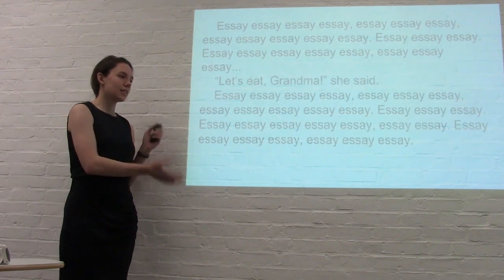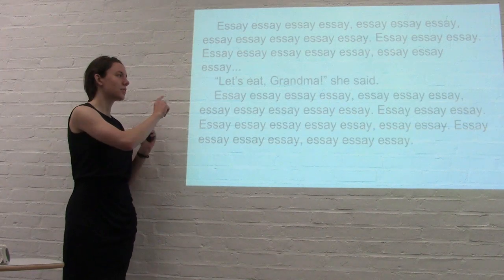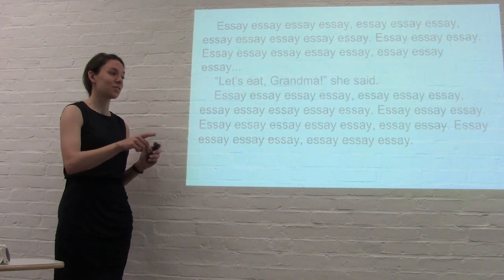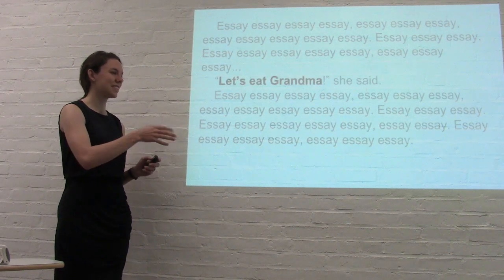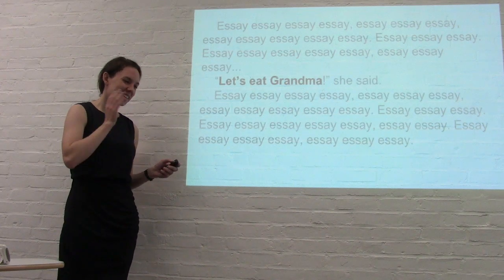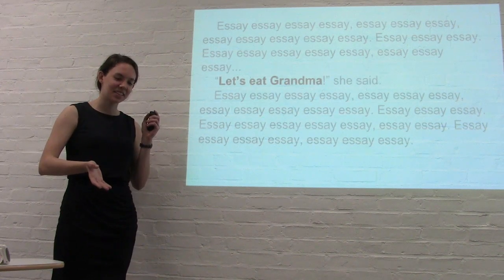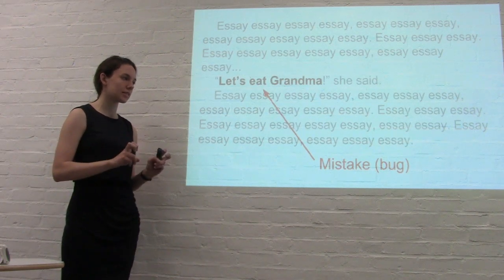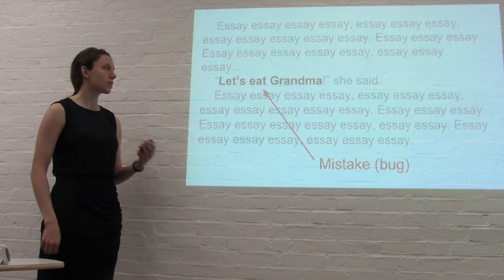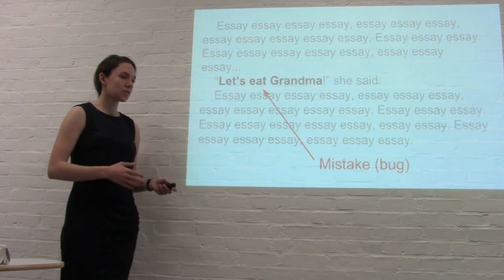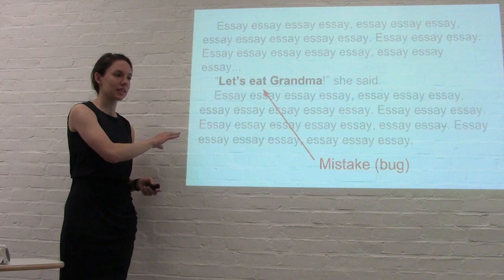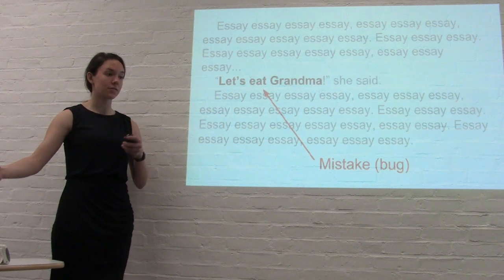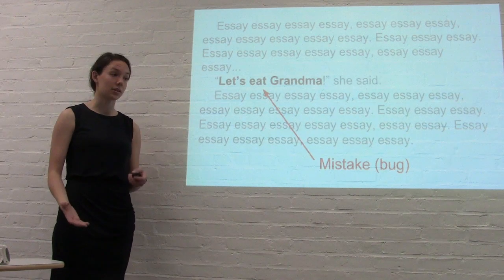Let's say that you have your essay and in part of your essay you write "let's eat, Grandma." What if you deliberately changed this to something that would totally change the meaning? "Let's eat Grandma." In an essay, this would be a mistake, and in computer science, we call mistakes like this bugs — problems in the program that cause some sort of error. So if you deliberately created mistakes or bugs like this in the program and then saw whether your teacher or the program checking robot found them, then you would know how good of a job they're doing.